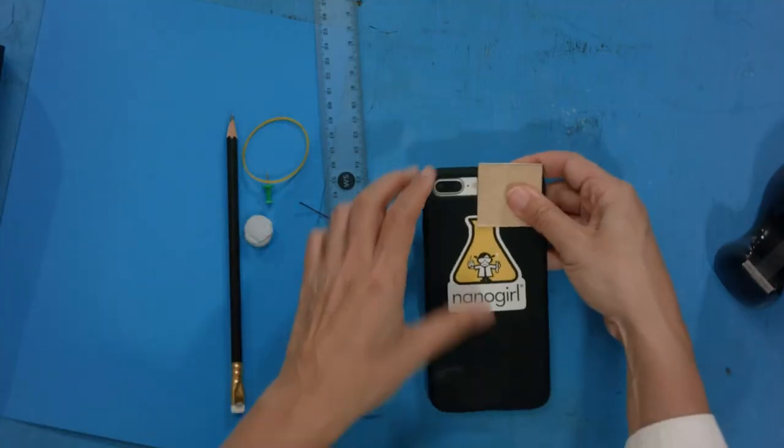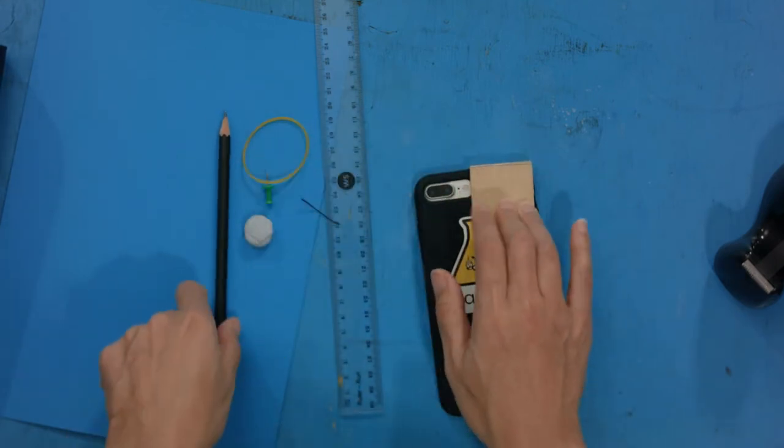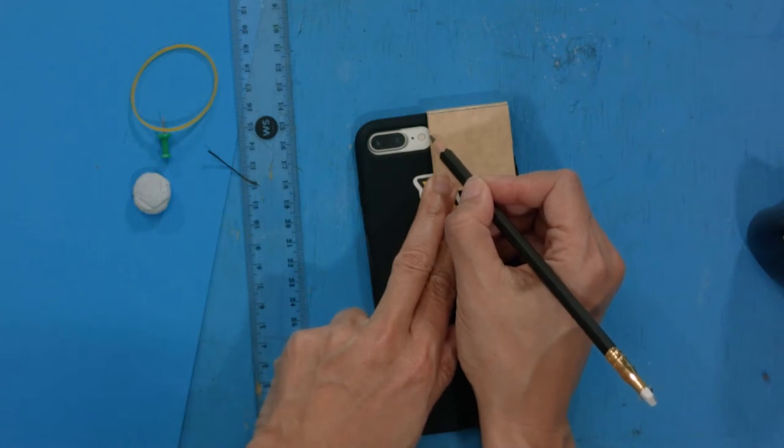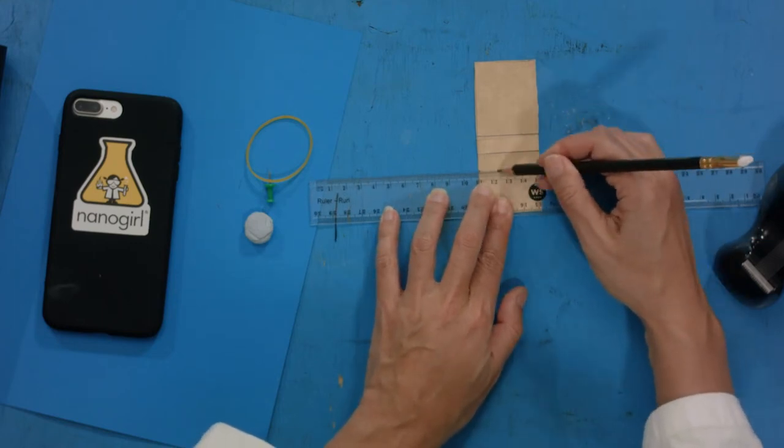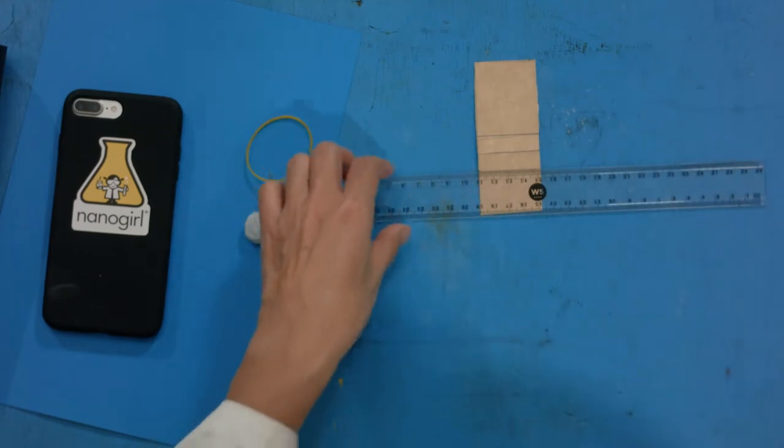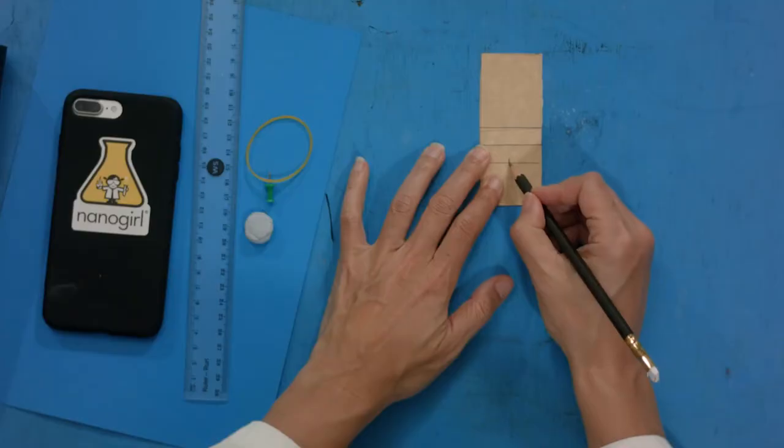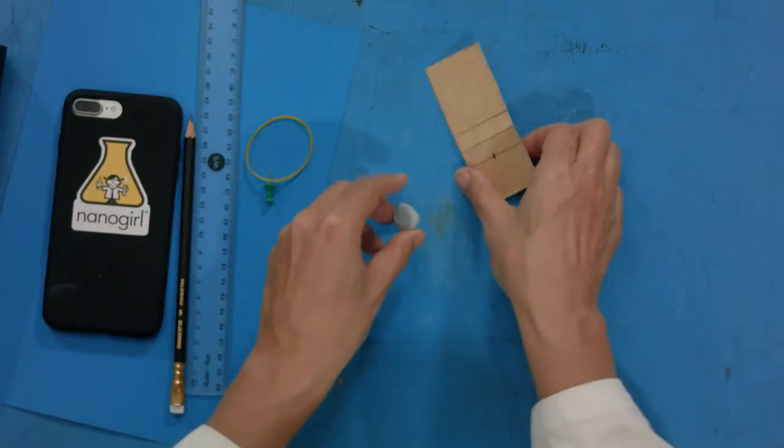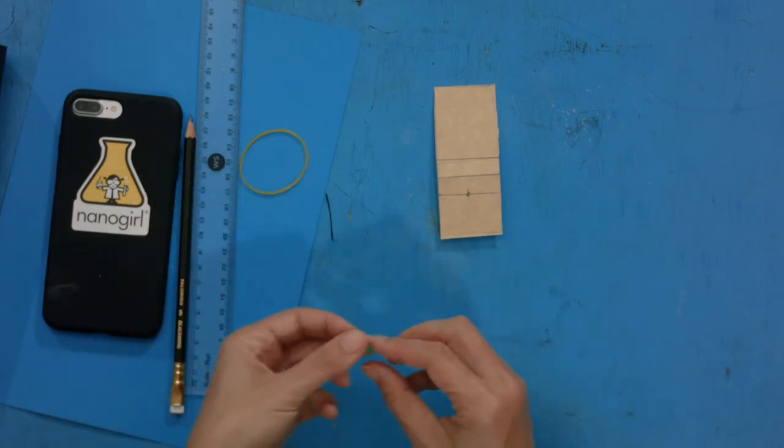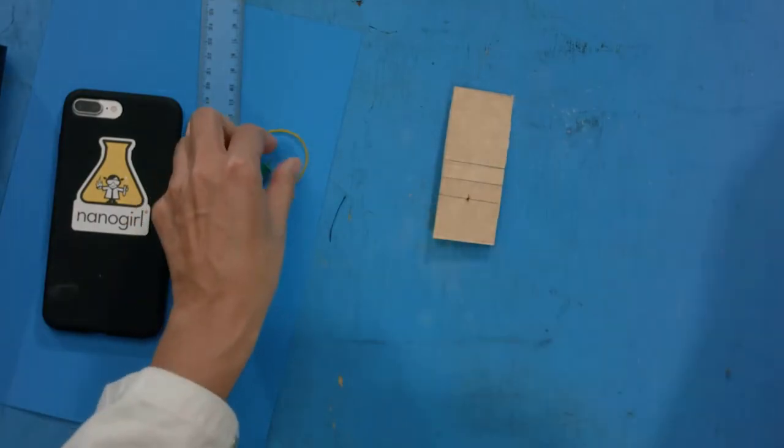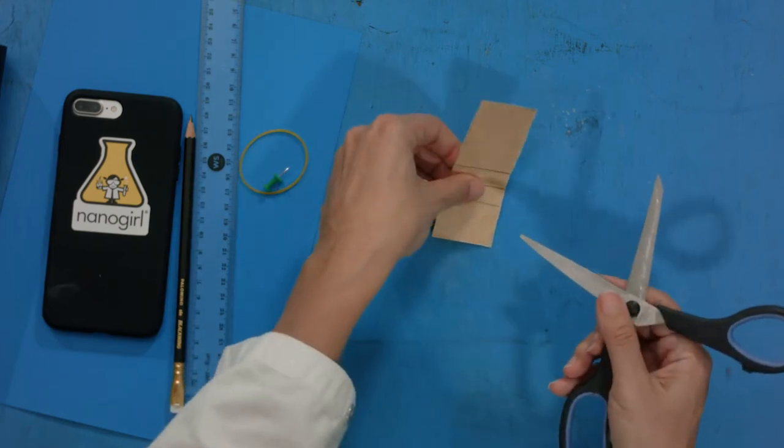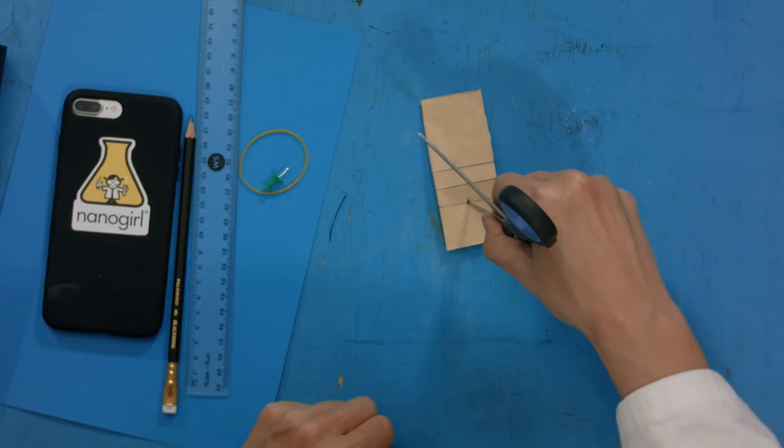We're going to need a hole for the torch to shine through. So set your bracket so that it is over your phone and nearly, but not quite, covering your torch. Draw a horizontal line across from that torch position and mark the middle point. Now I know that this is four centimeters, so my middle point is going to be at two centimeters. At this middle point, put some blue tack underneath and then take your push pin and make a hole right in that middle point and wiggle it around a little bit.